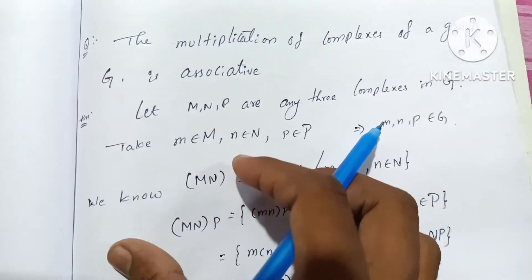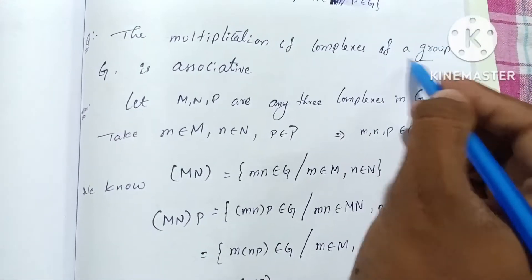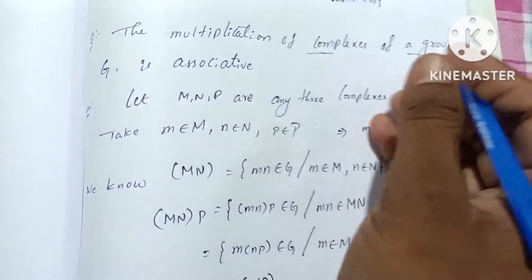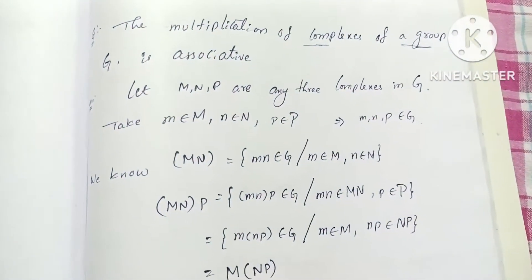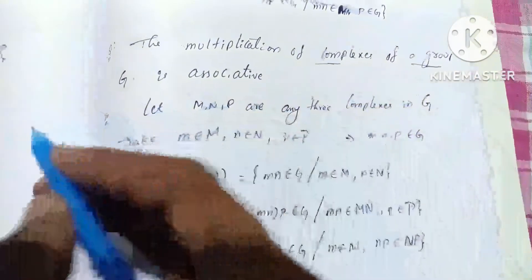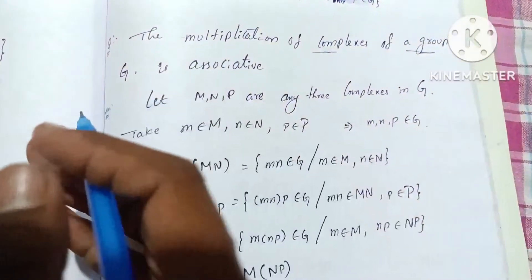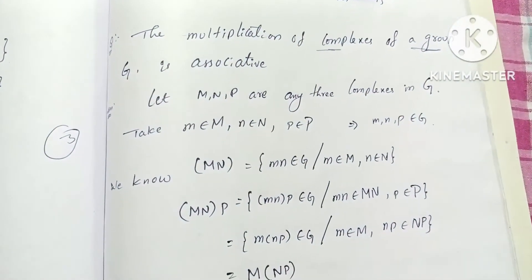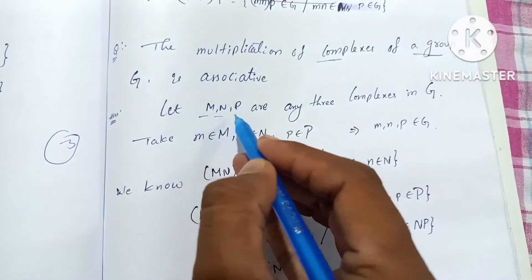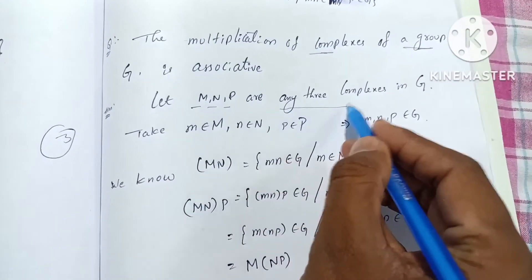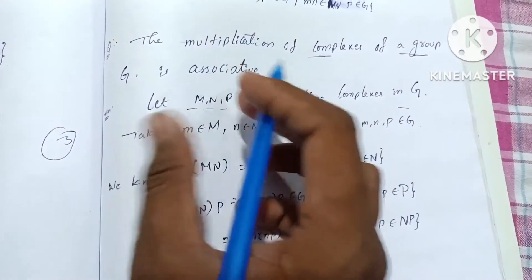The multiplication of complexes of a group G is associative. To prove this, let M, N, P be three complexes in G, where M is the set of elements small m, N is the set of elements small n, and P is the set of elements small p.